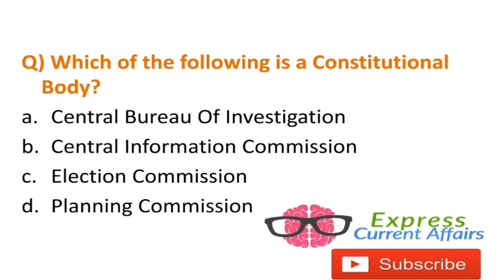Question: Which of the following is a constitutional body — Central Bureau of Investigation, Central Information Commission, Election Commission, or Planning Commission? The answer is C — Election Commission. One must know what are constitutional bodies, statutory bodies, advisory bodies, extra-constitutional bodies, and non-constitutional bodies. This is a very important area from the polity section and an expected question that has been asked recently.